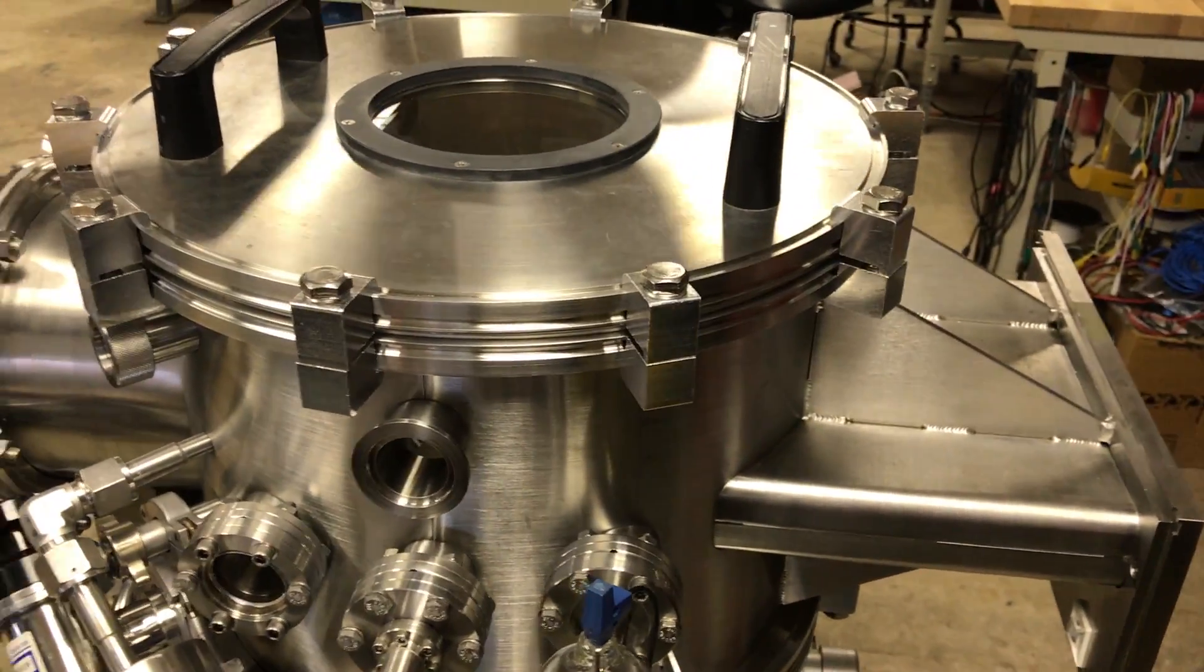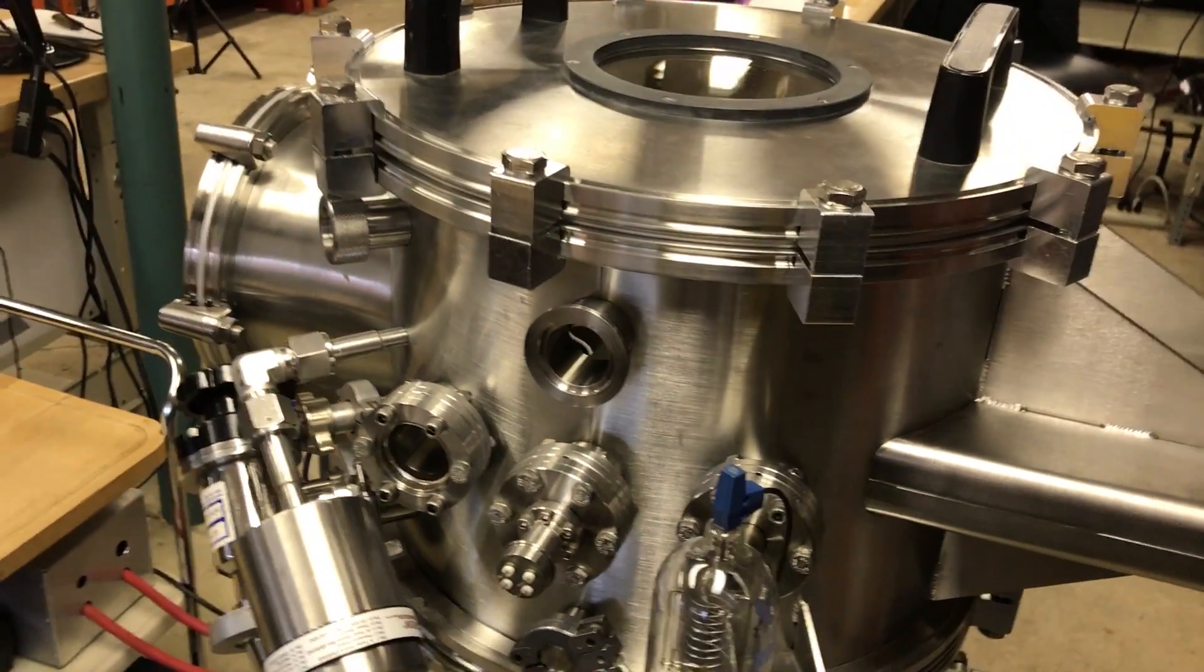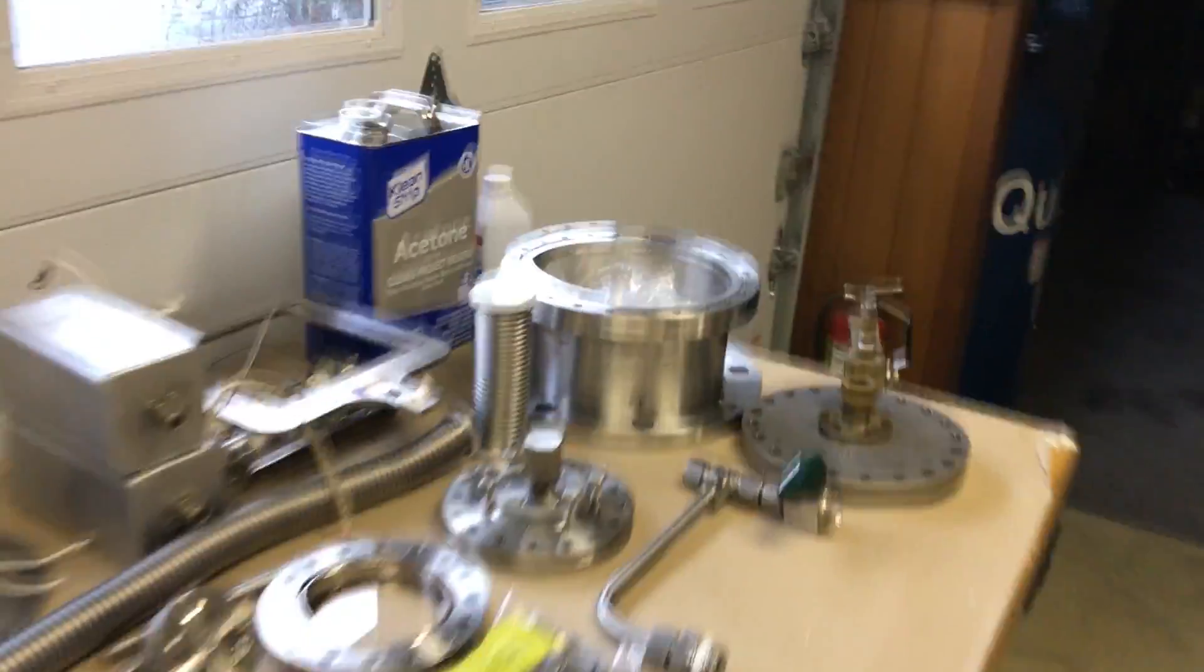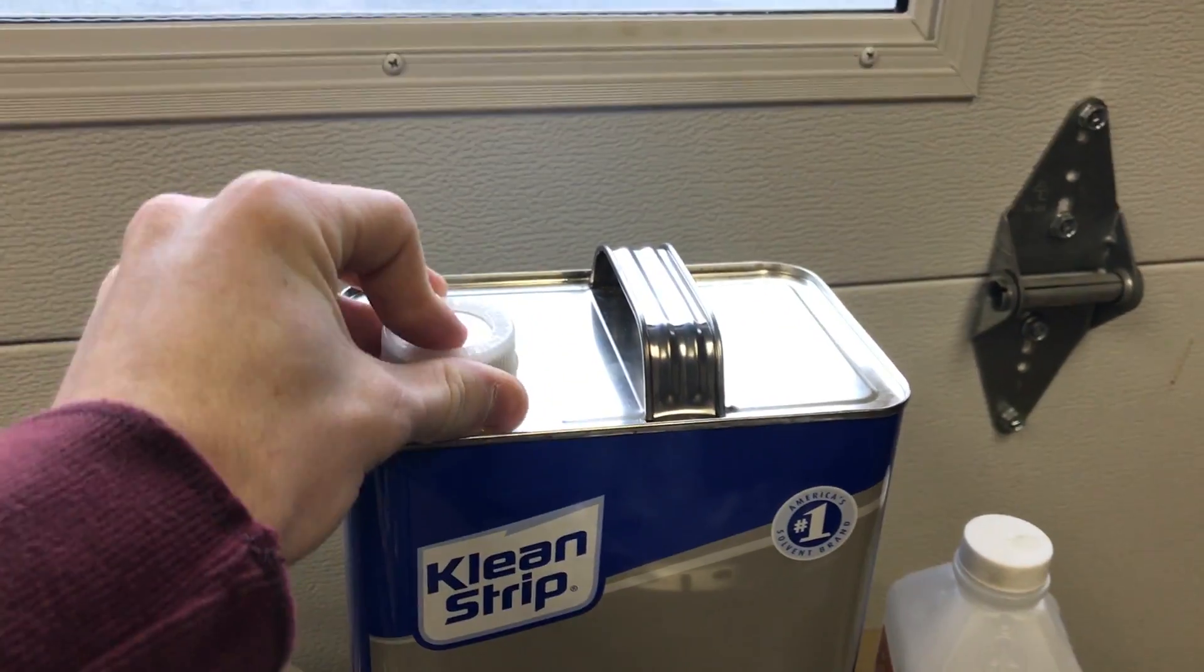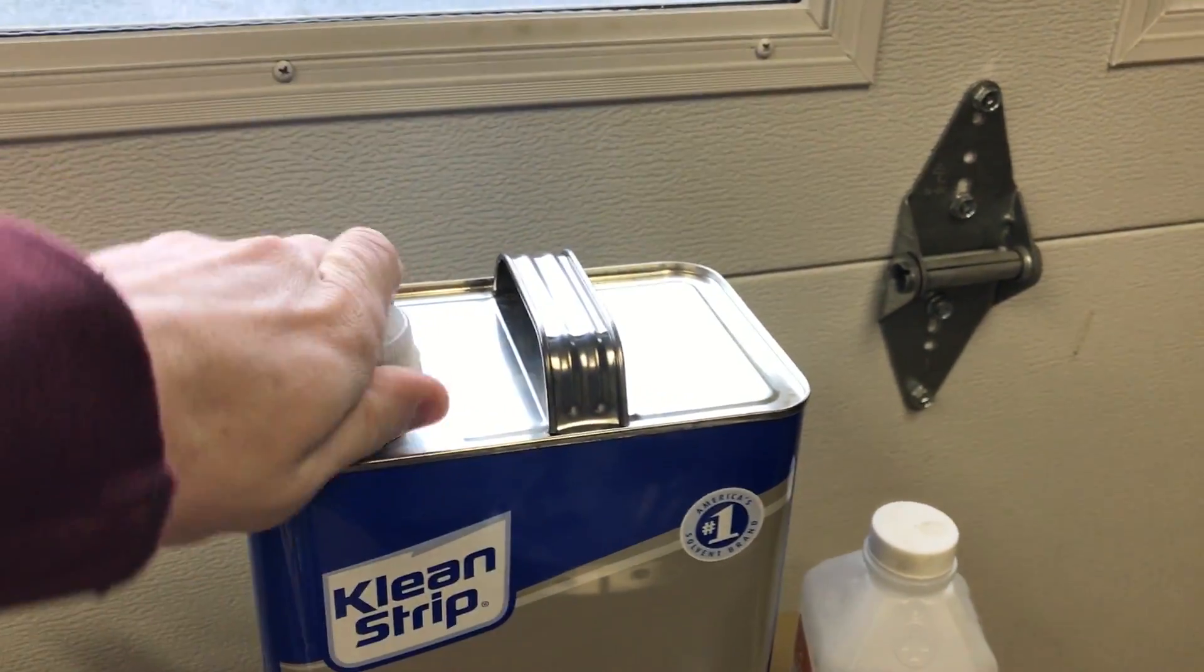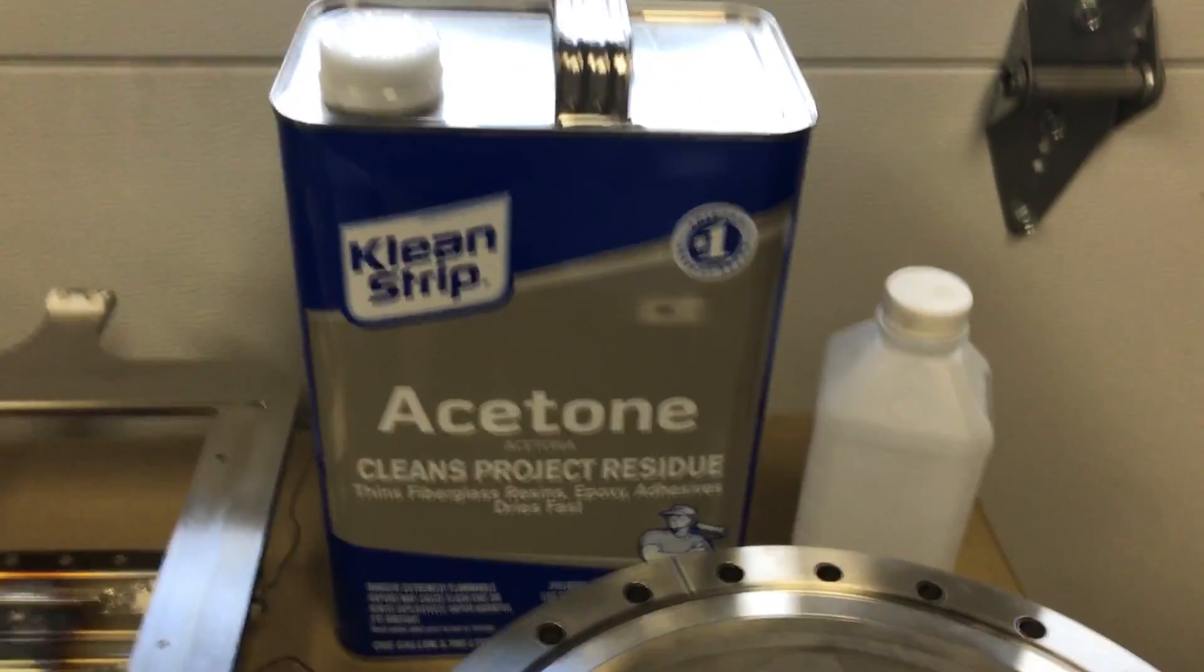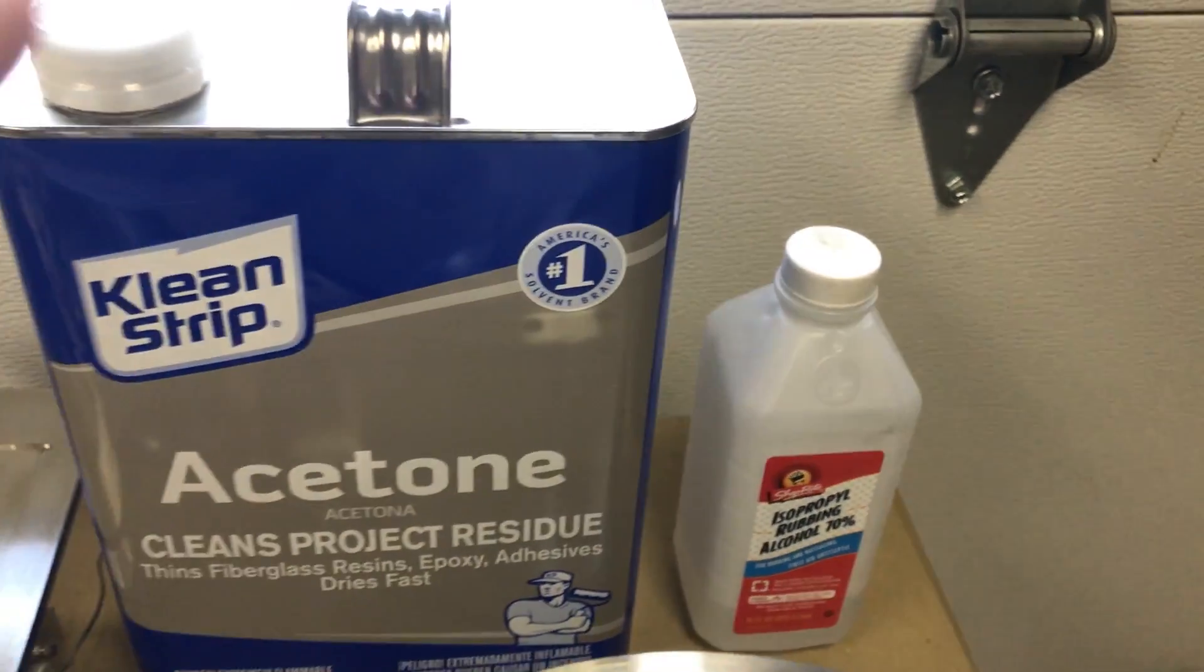If you want to get in the 1x10 to the minus 6 to the minus 7 and beyond torr range, you're going to have to do a pretty thorough wipe down of your chamber. The best thing to do, you can do an additional wipe down with acetone, and that will get rid of fingerprints and organics and stuff like that. And then after that, you want to do an isopropyl alcohol wipe down to get rid of the acetone residue.